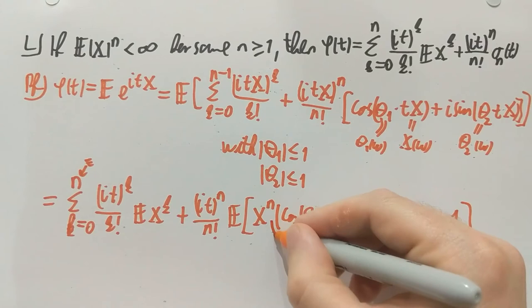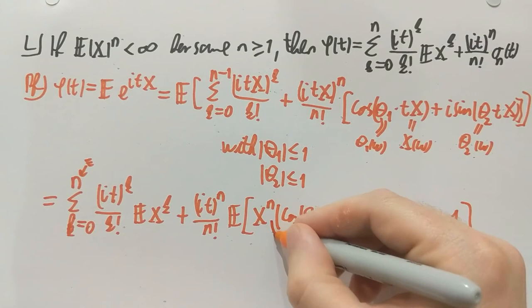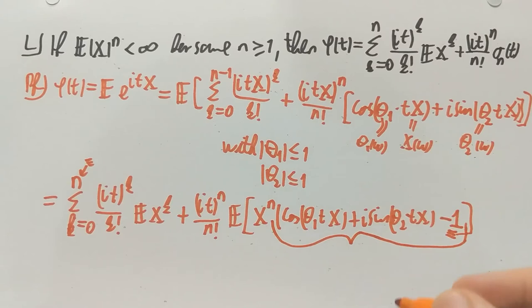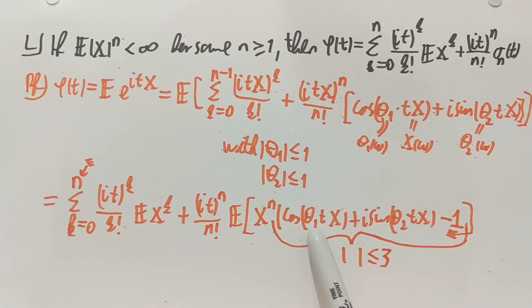Now this part here is sines and cosines of real numbers. I didn't tell you but these are real numbers. These thetas are real numbers. So this part here is less than or equal to three. And if I take t to zero. Then sine goes to zero. Cosine goes to one. Subtract one. The whole thing goes to zero in t as t goes to zero.